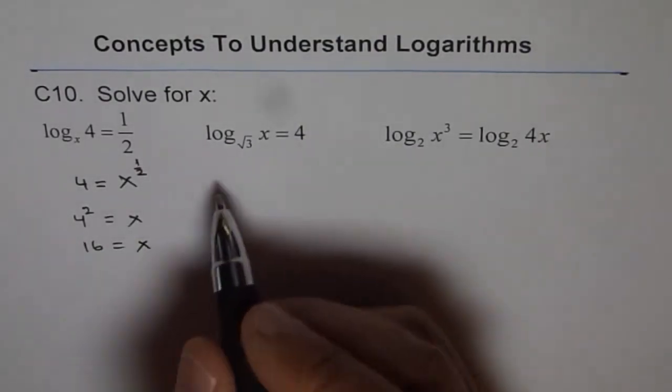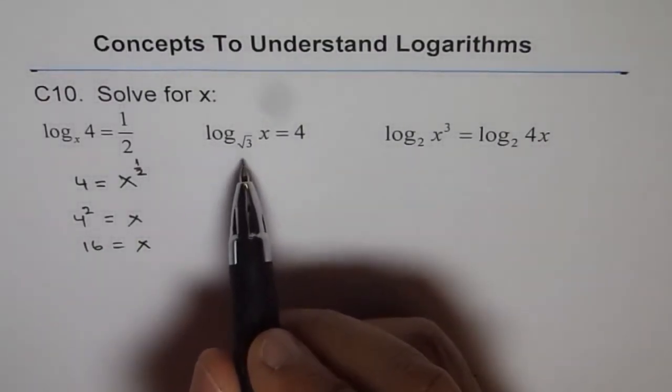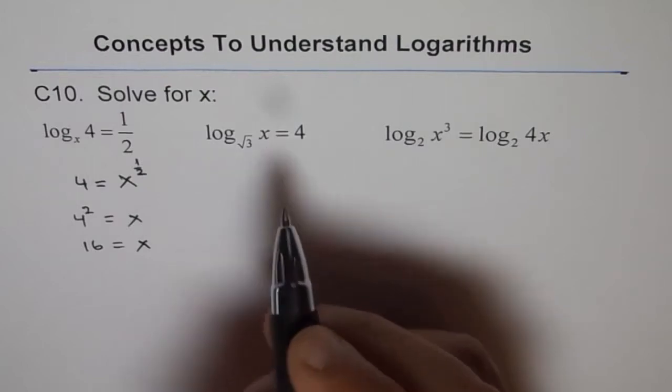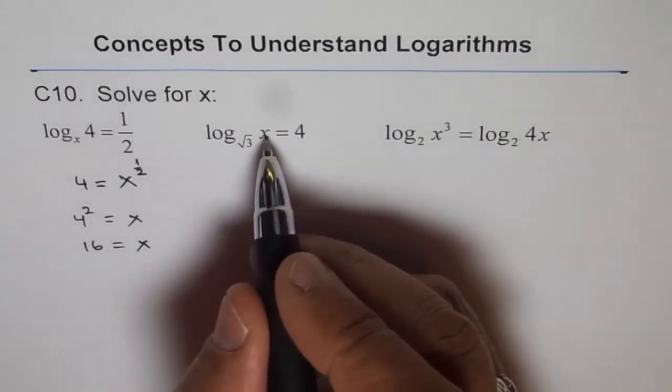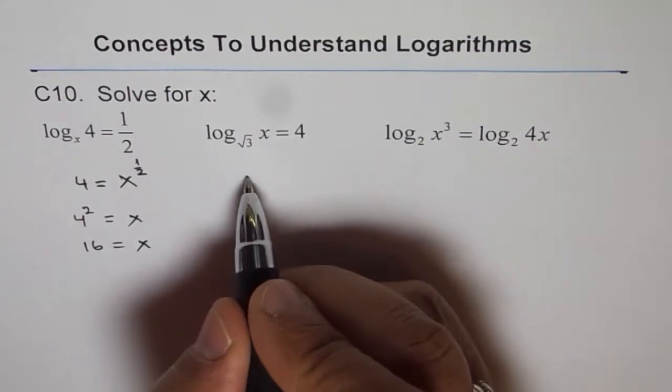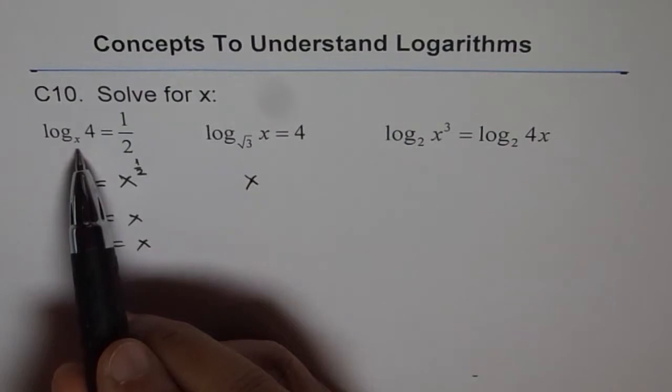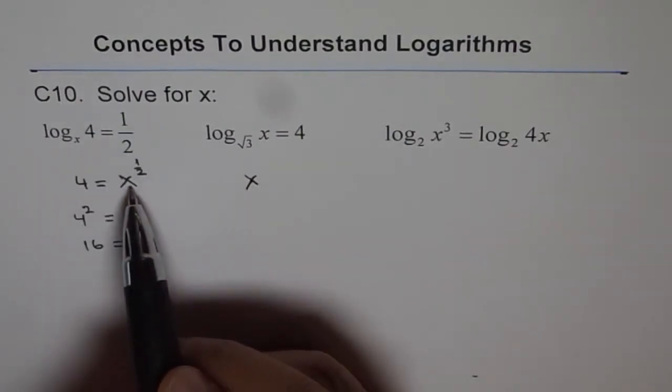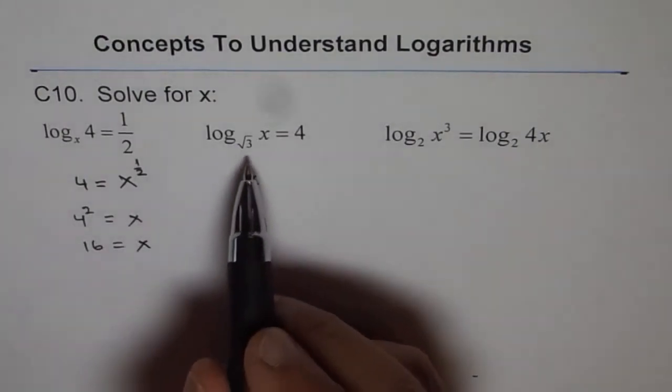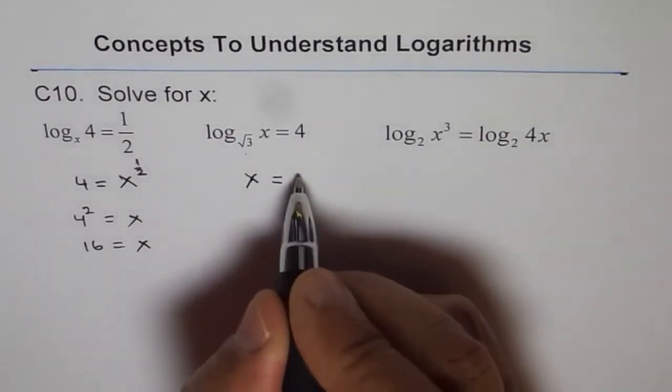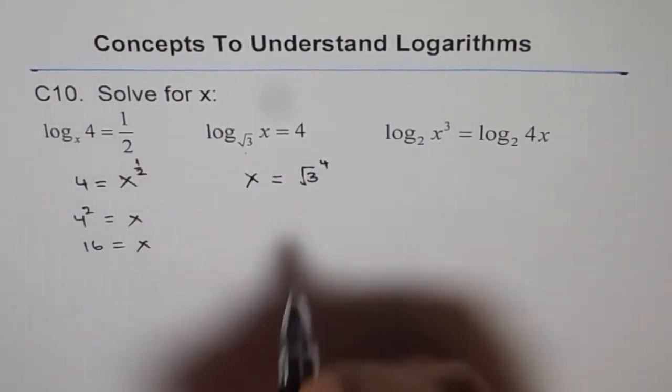The second one. Here, we have base square root of 3. Therefore, we can write x as equal to, again, the similar exponential form. Last time, x was the base, so it became base to the power of half, which was 4, and then we squared it. This time, the base is square root 3, so x equals to the base, which is square root 3 to the power of 4.